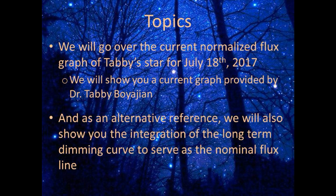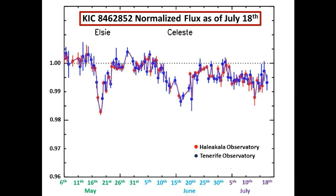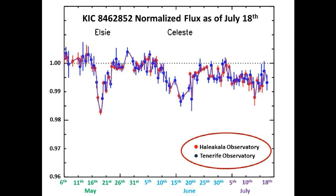As an alternative reference, as we had mentioned in our last video, we will start showing you the integration of the long-term dimming curve to serve as the nominal flux line. This is today's flux graph taken in the R-band across two different locations on opposite sides of the Earth and across multiple telescopes at each site.